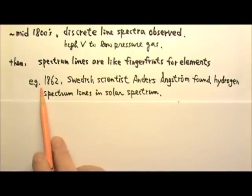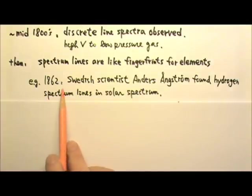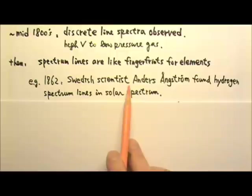For example, in 1862, Swedish scientist Anders Angstrom found hydrogen spectrum lines in solar spectrum, which led to his discovery of hydrogen's presence in the Sun's atmosphere.